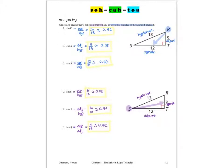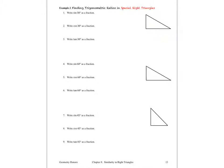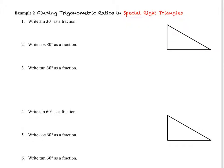In example two, we're going to look at trigonometric ratios of special right triangles. We had two different kinds: a 30-60-90 degree triangle and a 45-45-90 triangle. We'll write out sine, cosine, and tangent for both. A great place to start is by labeling the triangle. We know the smallest angle is the 30-degree angle and the medium-sized angle is the 60-degree angle. The side opposite the smallest angle is the shortest, with length x; the hypotenuse is 2x; and the long leg is x times the square root of 3.